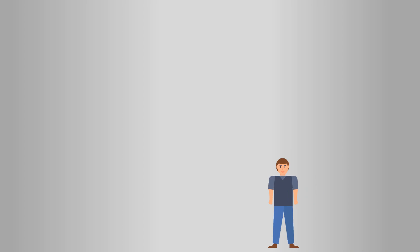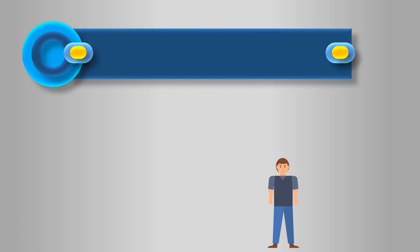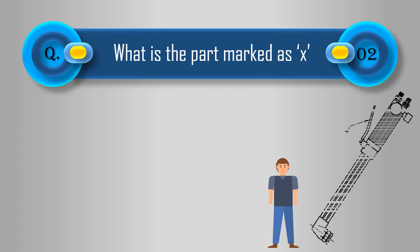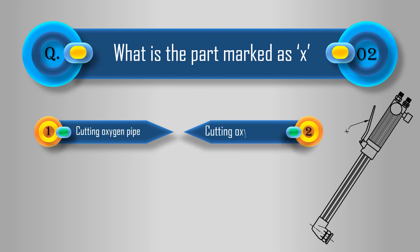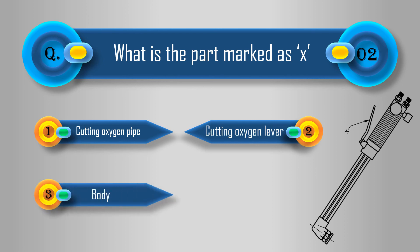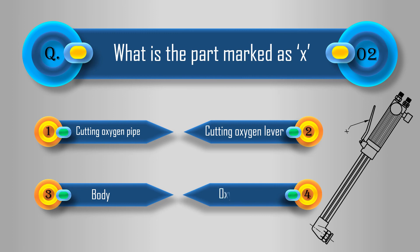After the completion of this topic, we are going to play one quiz related to this topic. The question is: What is the part marked as X? The options are: 1. Cutting oxygen pipe. 2. Cutting oxygen lever. 3. Body. 4. Oxygen valve. The answer is cutting oxygen lever.